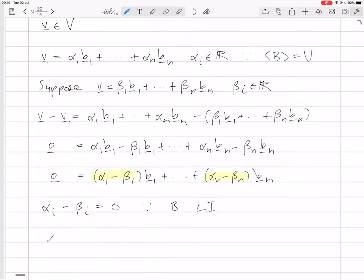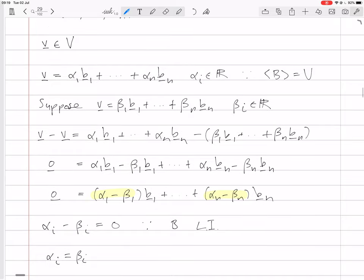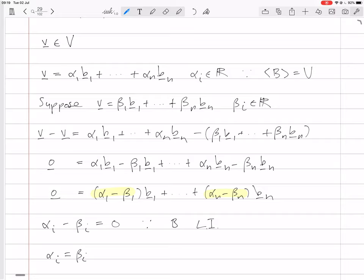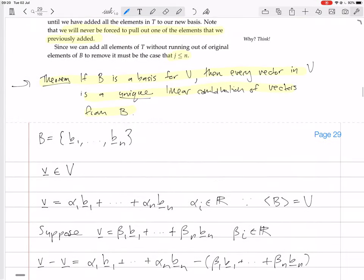But that means, of course, that αᵢ = βᵢ for all i. So those supposedly two different ways of expressing v, one with the scalars αᵢ and one with the scalars βᵢ, are actually the same. The scalars are the same. It's a unique way of expressing a vector as a linear combination of basis vectors. So that proves this theorem.